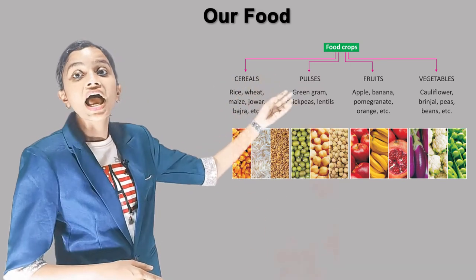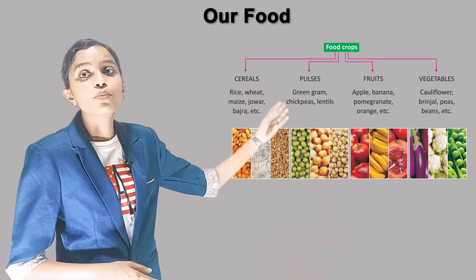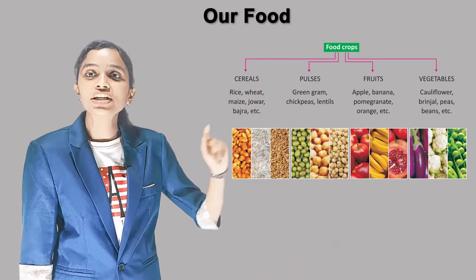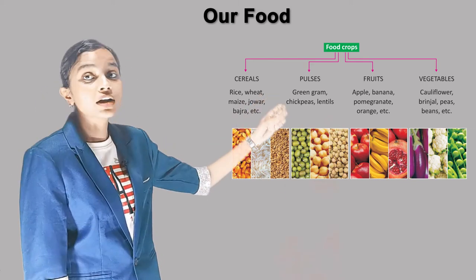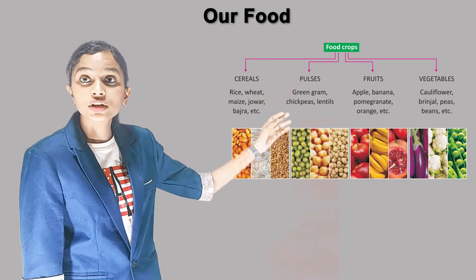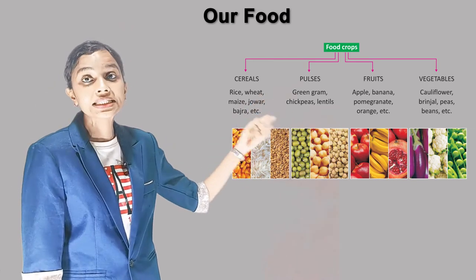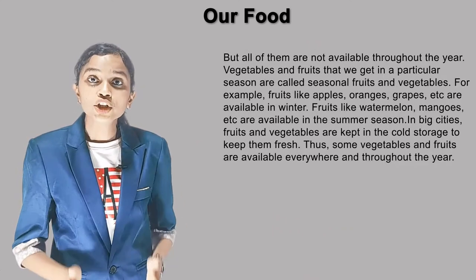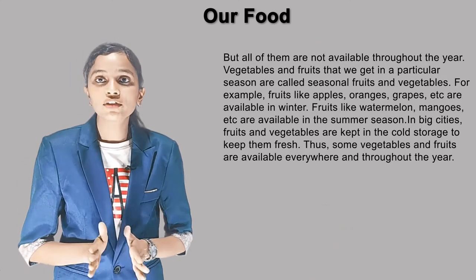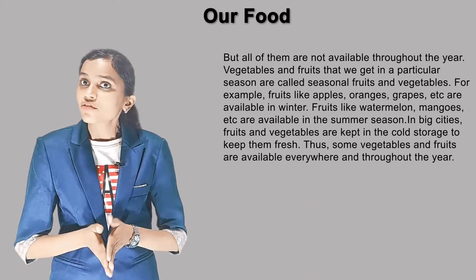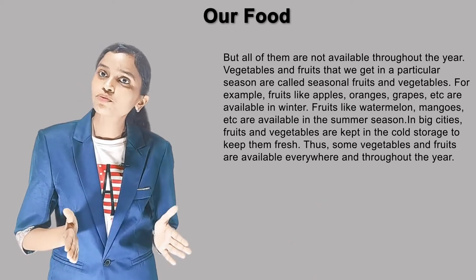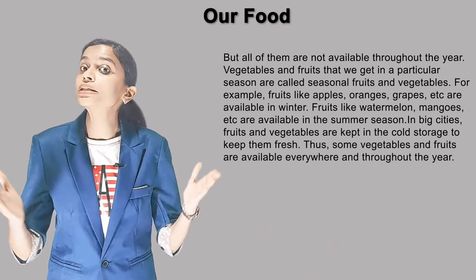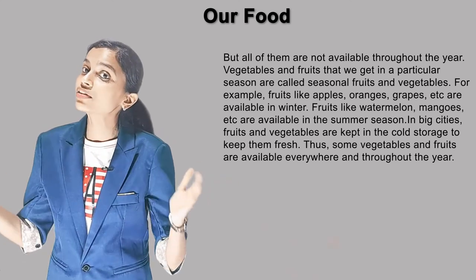Fruits include apple, banana, pomegranate, orange, etc. Vegetables include cauliflower, brinjal, peas, beans, etc. But all of them are not available throughout the year. Vegetables and fruits that we get in a particular season are called seasonal fruits and vegetables.